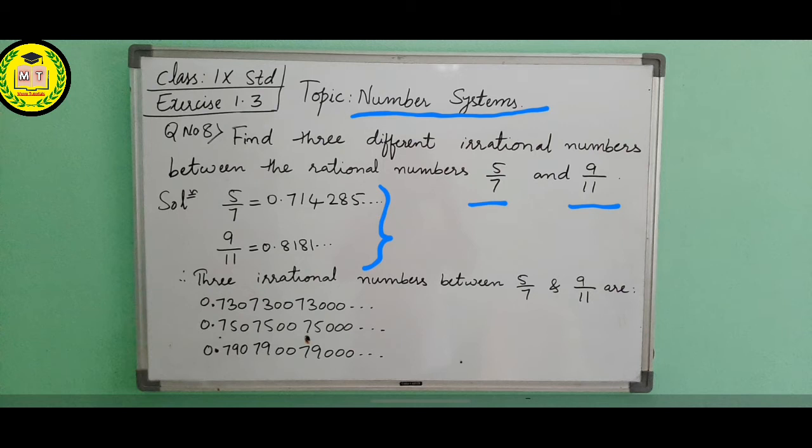Irrational means they should have non-terminating and non-recurring. So whatever numbers you are writing, they should not have repeatedly coming same numbers and they should not be finite. So we have to put the dashes, then only they will become infinite.